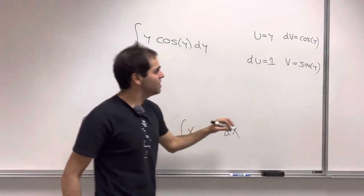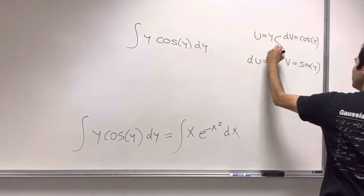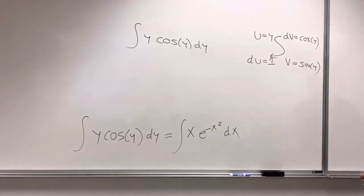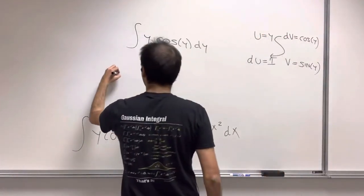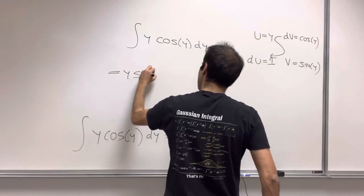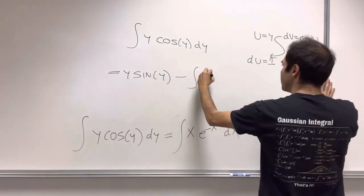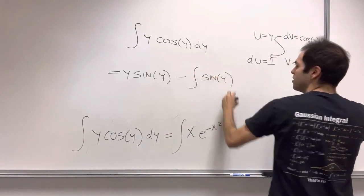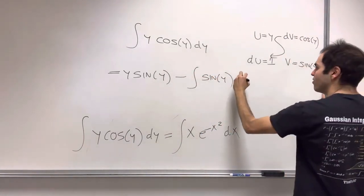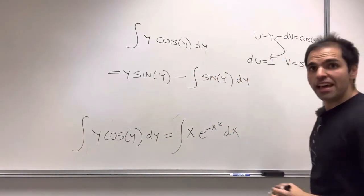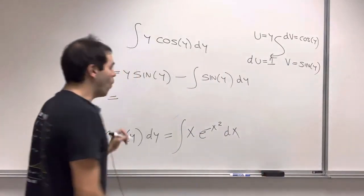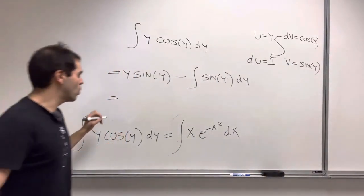and then z like Zorro, whoosh. And what you get is y sine of y minus integral of 1 times sine of y, so minus integral of sine of y dy, which then simplifies to y sine of y plus cosine of y.